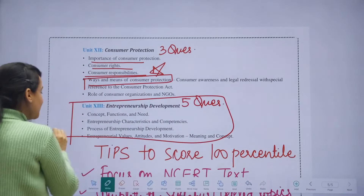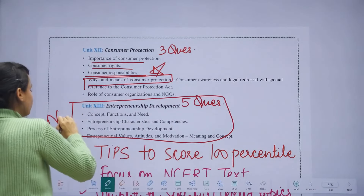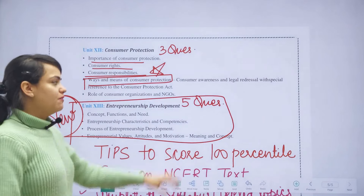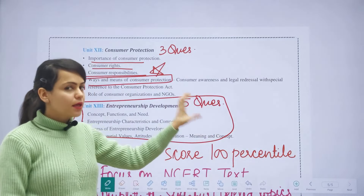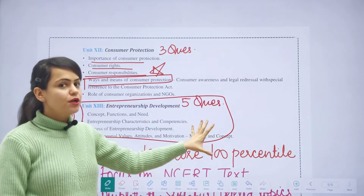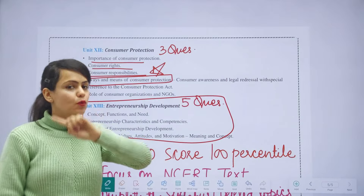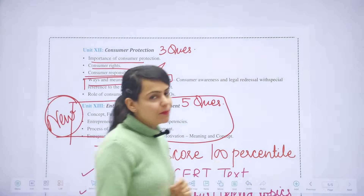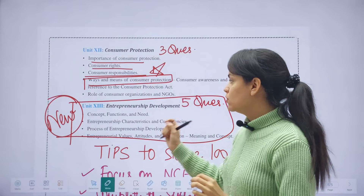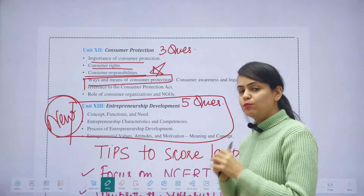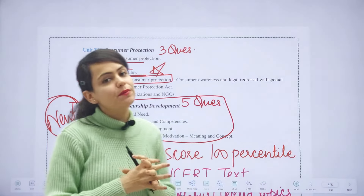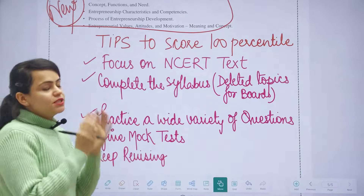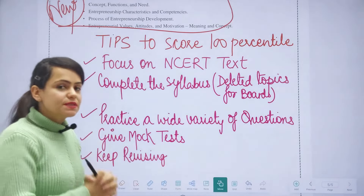Now, this chapter — Entrepreneurship Development — is completely new for you. Five questions were asked from this unit in the previous year question paper. We will cover this chapter together, and I will give you keywords, key lines, and important MCQs to discuss.